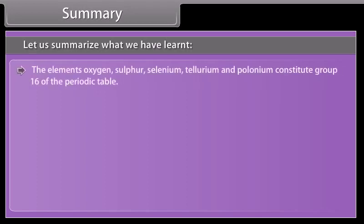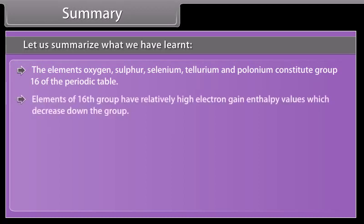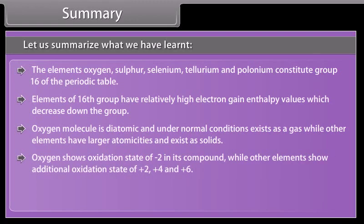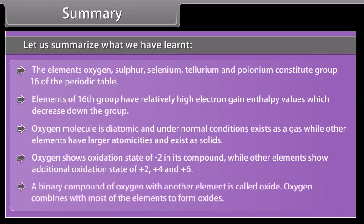The elements oxygen, sulphur, selenium, tellurium and polonium constitute group 16 of the periodic table. Elements of 16th group have relatively high electron gain enthalpy values which decrease down the group. Oxygen molecule is diatomic and under normal conditions exists as a gas, while other elements have larger atomicities and exist as solids. Oxygen shows oxidation state of -2 in its compound, while other elements show additional oxidation states of +2, +4 and +6. A binary compound of oxygen with another element is called oxide. Oxygen combines with most of the elements to form oxides.